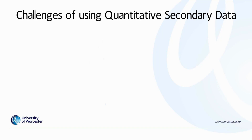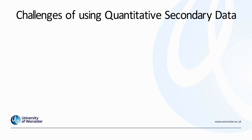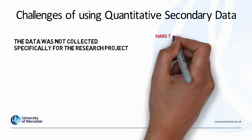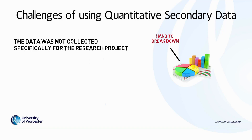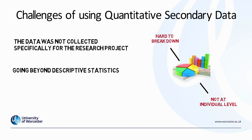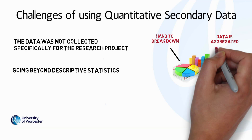There are challenges to using quantitative secondary data. Firstly, the data was not collected specifically for the research project, and this often means the data is aggregated together, which can make it hard for the researcher to break down. Particularly if the research is looking to conduct inferential statistics and go beyond descriptive statistics, the researcher will often need the variables and data at the individual level — and this is often aggregated together in secondary data sets.